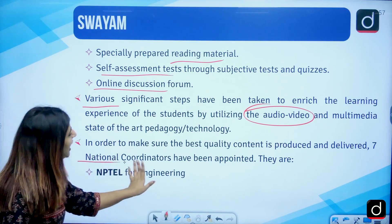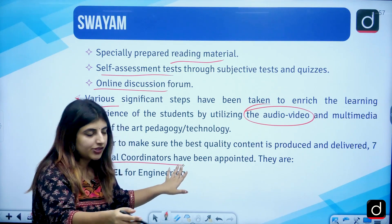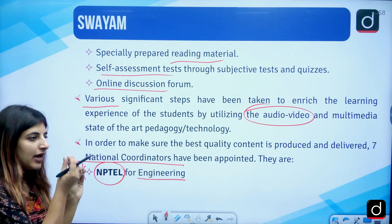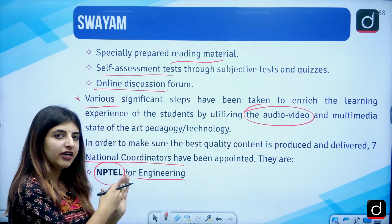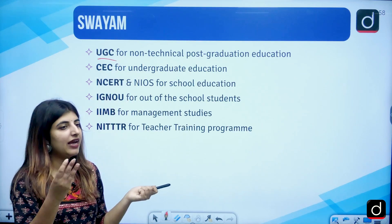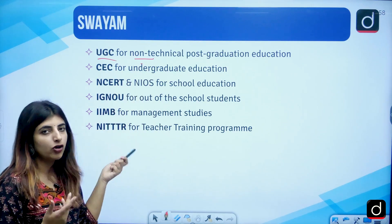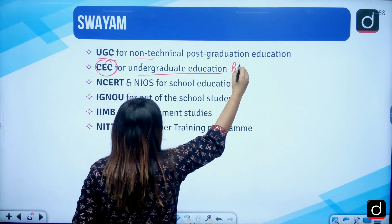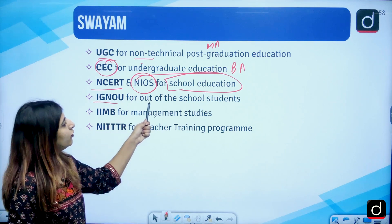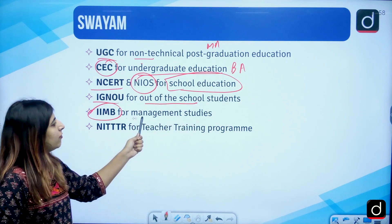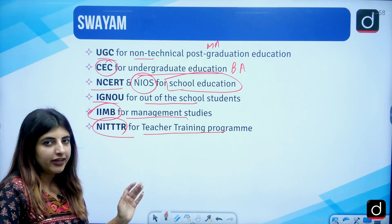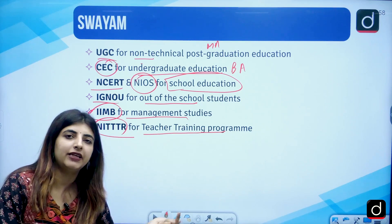Under SWAYAM, there are seven national coordinators for different courses. NPTEL is for engineering; UGC for non-tech postgraduate courses like English and history; CEC for undergraduate courses; NCERT and NIOS for school education; IGNOU for out-of-school students; IIMB for management studies; and NITTTRs for teacher training. You should jot these seven national coordinators and know which body handles which type of subject.